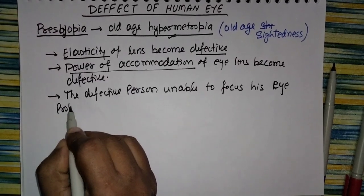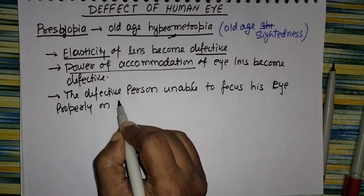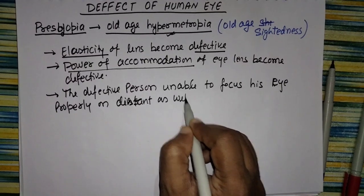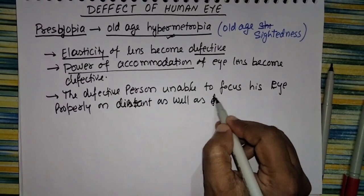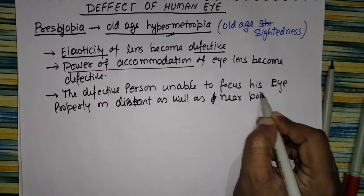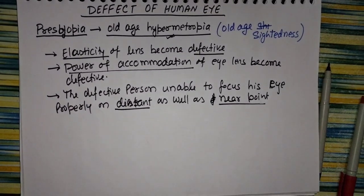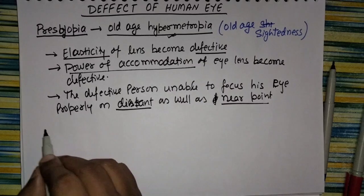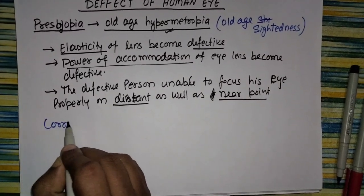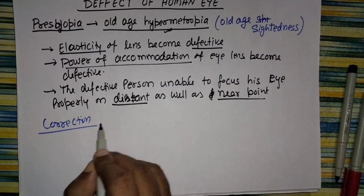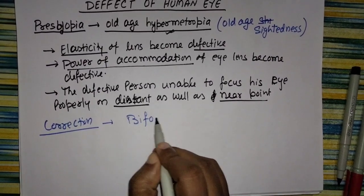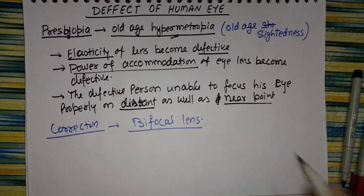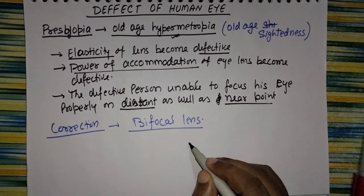The ability to focus will be defective. The person cannot focus properly at distant as well as near points. This is not only about one point — it affects both the far point and the near point. For correction, we use bifocal lenses with spectacles.